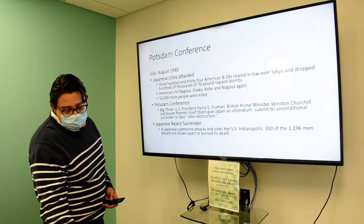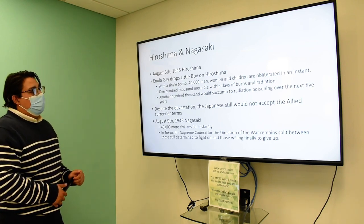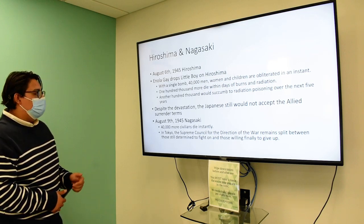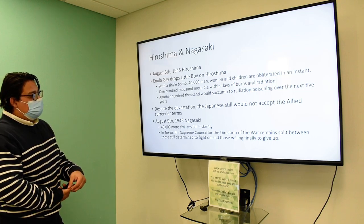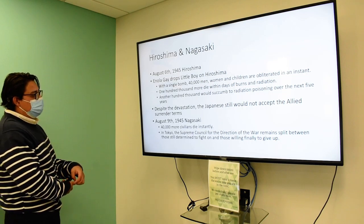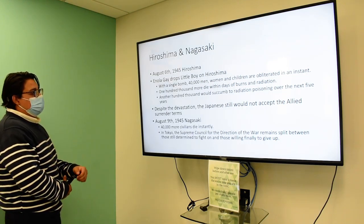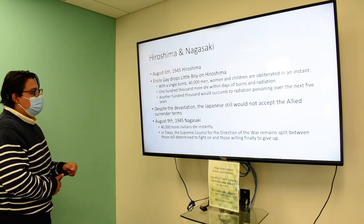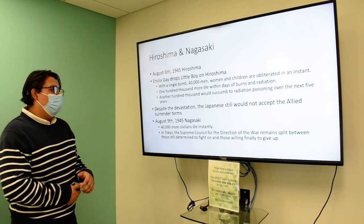This left America with little choice. On August 6, 1945, the Enola Gay dropped Little Boy on Hiroshima. With a single bomb, 40,000 men, women, and children were obliterated instantly, and a hundred thousand more died within days from burns and radiation. Another 100,000 would succumb to radiation poisoning over the next five years.